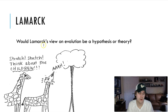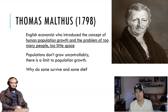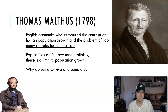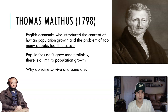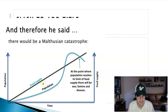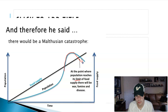Not only did Hutton and Lyell influence Darwin, a man named Thomas Malthus did as well. He was an economist who introduced the concept of human population growth and the problem of too many people. He saw how hunger and war kept the human population in check. He didn't account for the industrial revolution — the food, sanitation, and medicine that came from it. Darwin wondered: why do some survive and some die? If that worked for humans, wouldn't it work for organisms around the world as well?